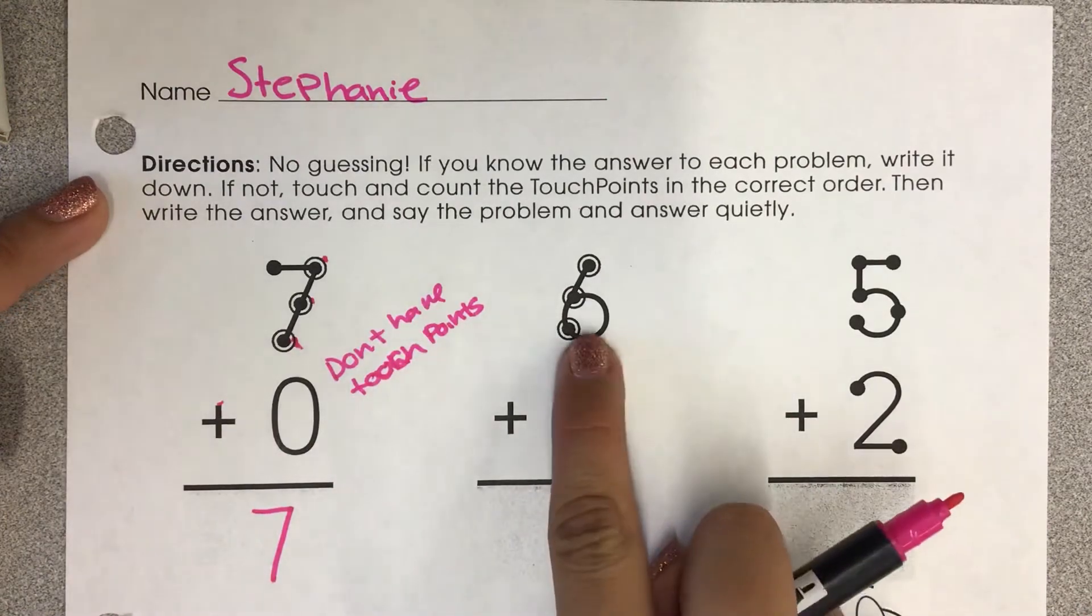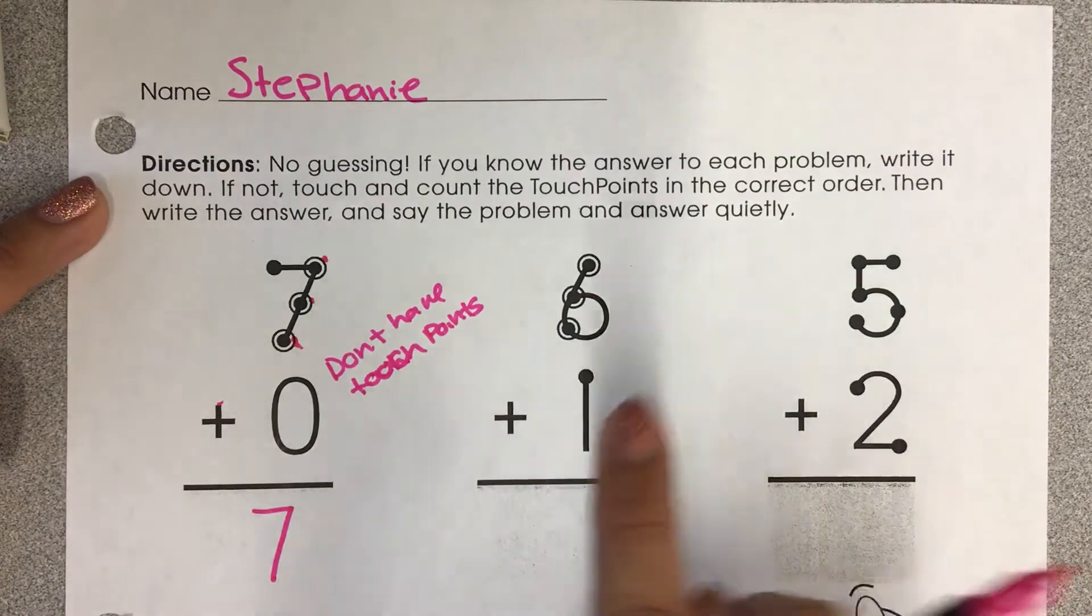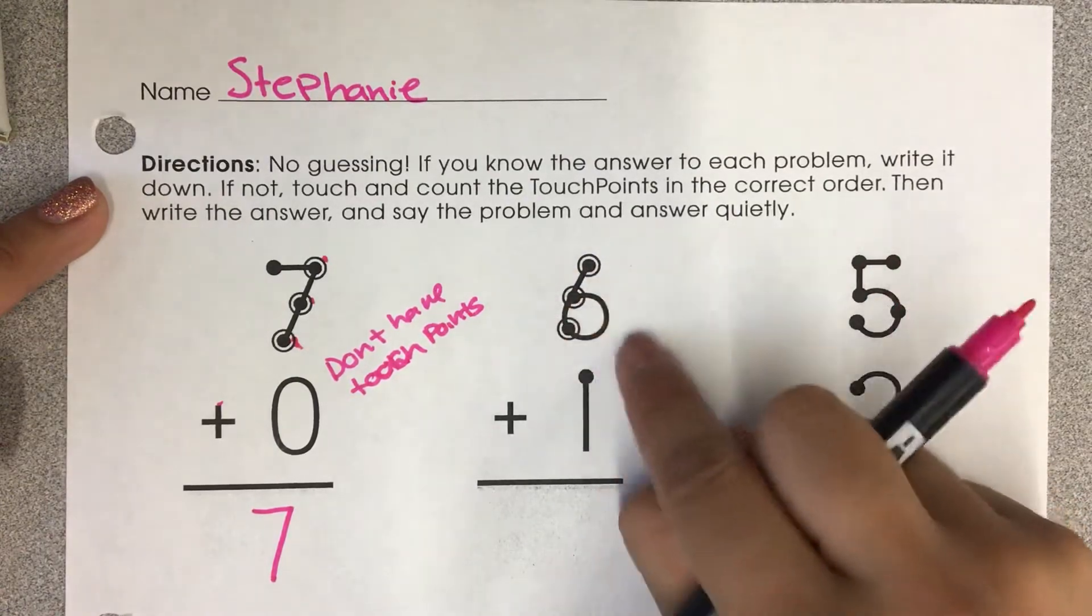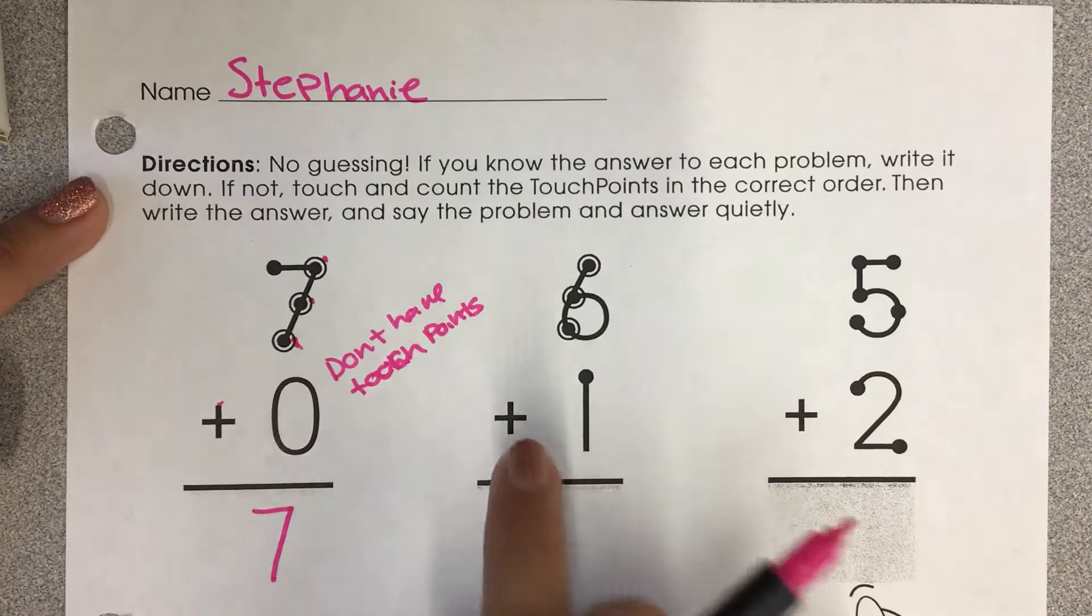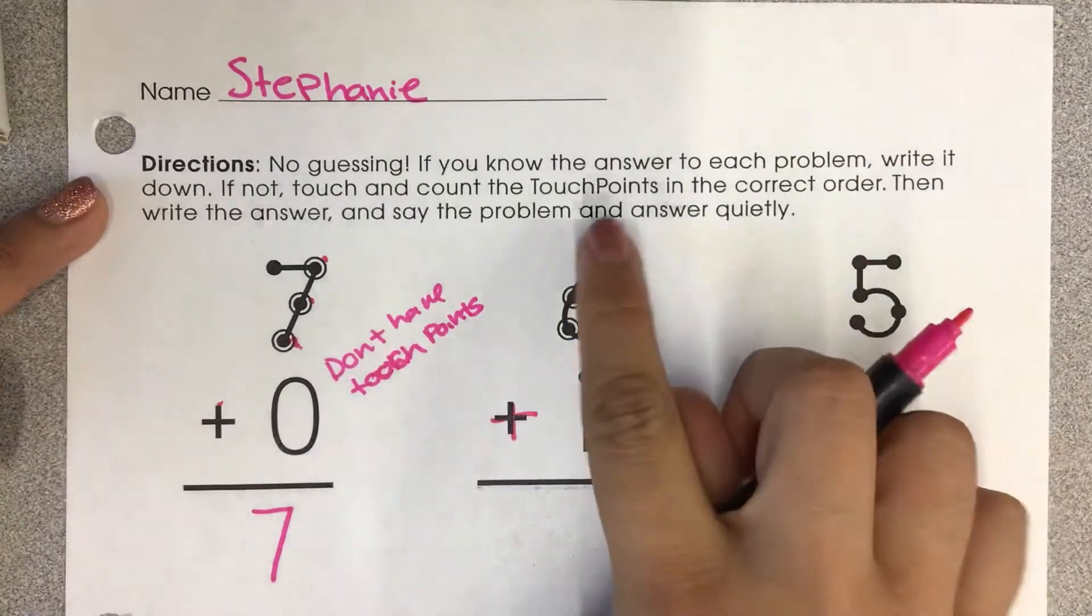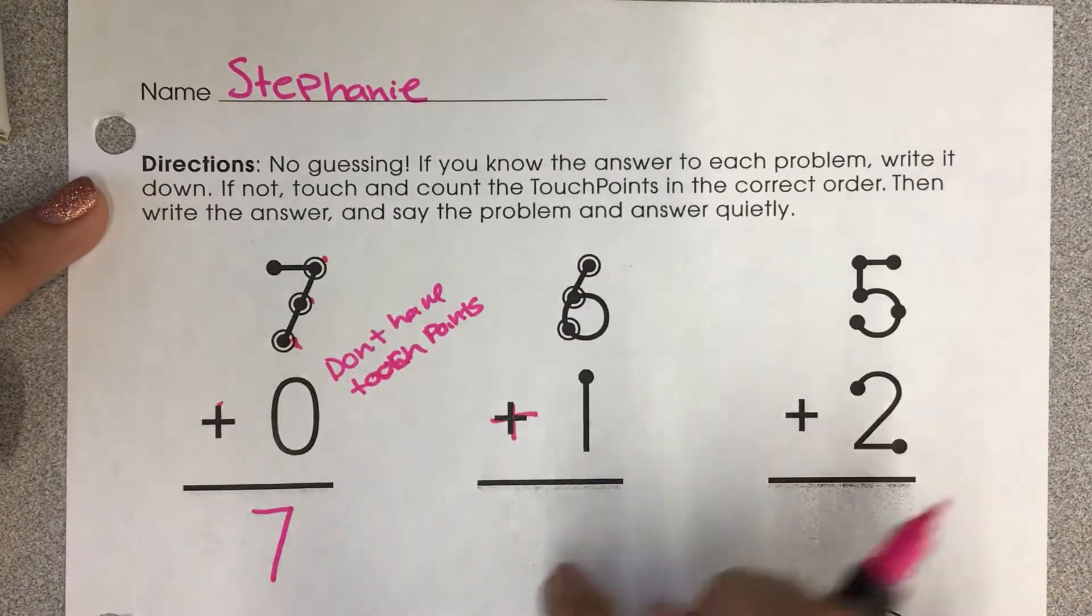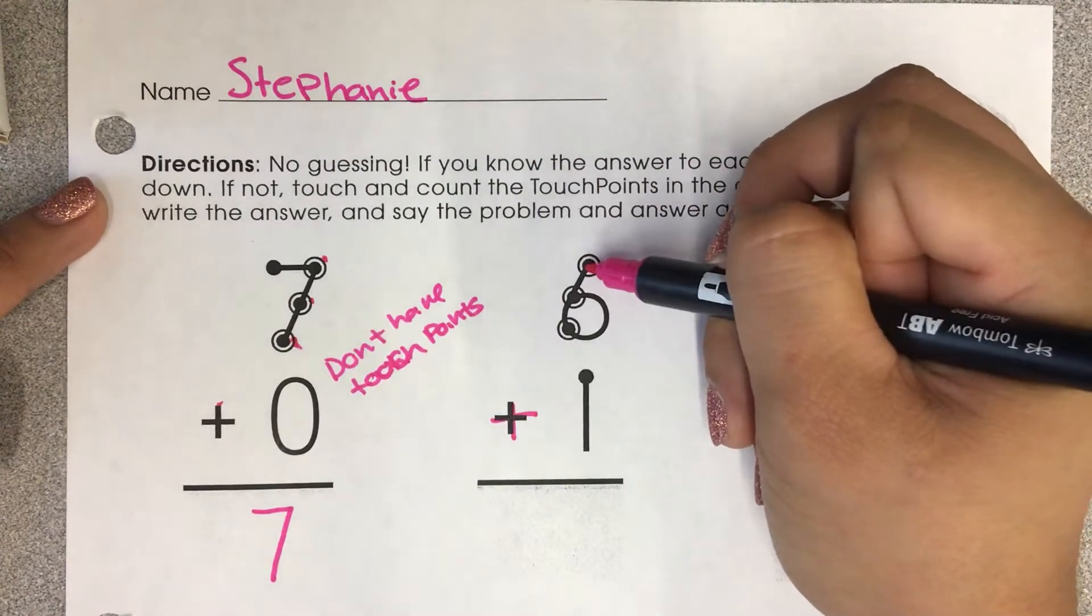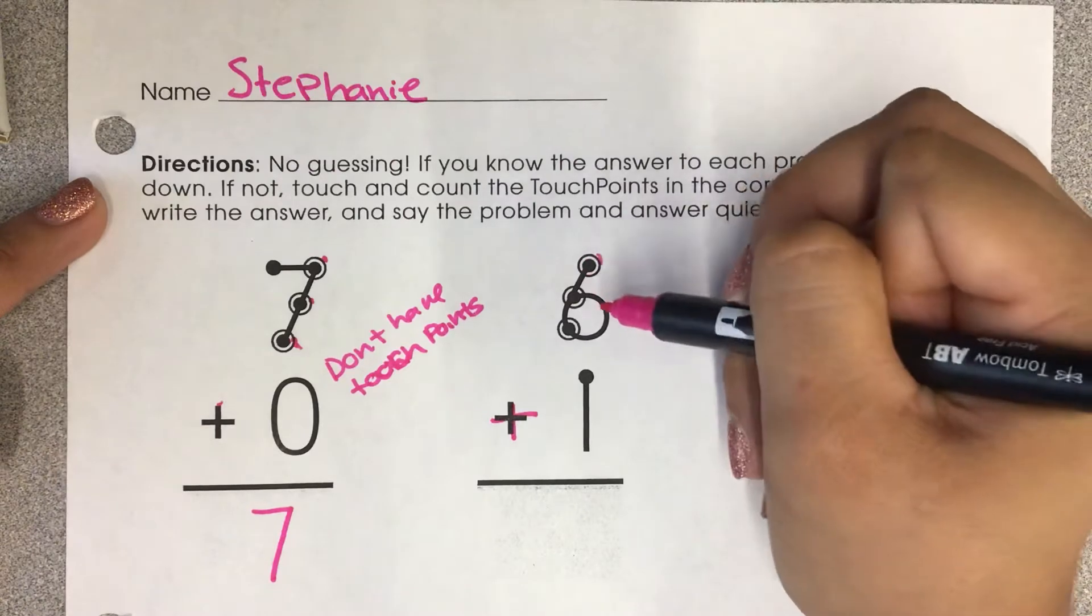Next, we have 6 plus 1. So we see both of our numbers have touch points. So we're going to count them all together because we're doing addition. You can tell by this plus sign right here in order to find the answer. So let's start counting the 6. And remember, we're touching, we're counting the dots and the rings around them.